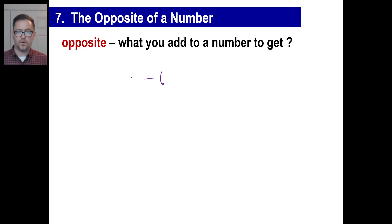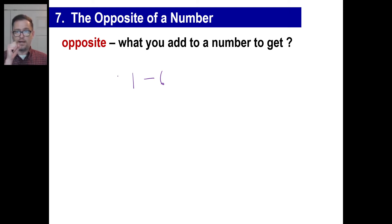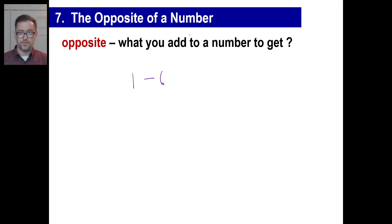If somebody says to you one minus six, you're on one at the number line and you're going six times to the left. In other words, it's the same thing as saying I have a one sitting here and I'm adding a negative six to it. They're different signs, so you ignore it — six minus one is five. And since this has the bigger absolute value, that's a negative. That means the answer is going to be negative.